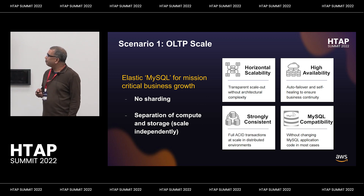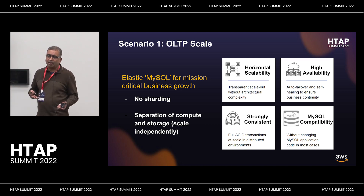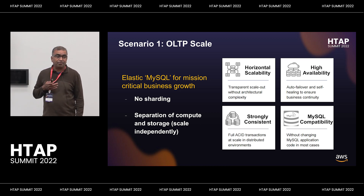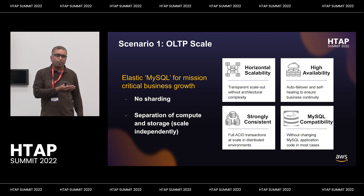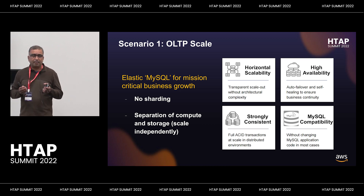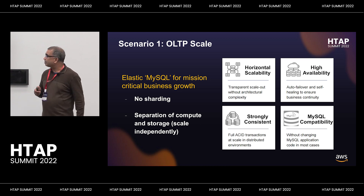There are several HTAP use cases. One is using it as an OLTP engine, since OLTP is at the heart of it. You don't need to do any sharding. Compute and storage are separated, which is key — most databases in the cloud world are moving towards this separation. It means you can horizontally scale both the compute layer and the storage layer independently. In the previous generation of databases, compute and storage were together, so upgrading required adding the entire combined structure. Here you can scale each independently based on your needs.